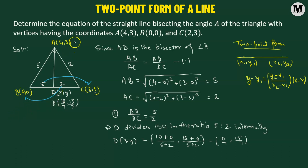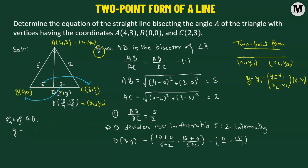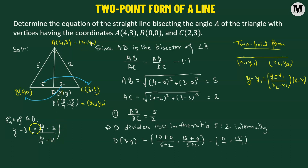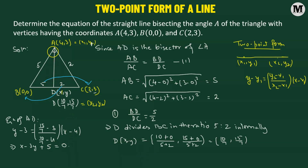We consider A as x1, y1 and D as x2, y2 to get the equation of the angle bisector AD. So: y minus y1 — where y1 is the Y coordinate of A, which is 3 — equals y2 minus y1 — that's 15 over 7 minus 3 — divided by x2 minus x1 — that's 10 over 7 minus 4 — multiplied by x minus x1, where x1 is 4. When we solve this, we get the equation of line AD, which comes out to be x minus 3y plus 5 equals 0. This is the equation of AD, or the equation of the angle bisector at A.